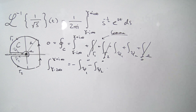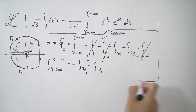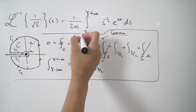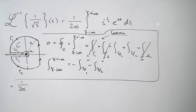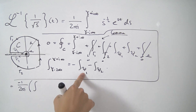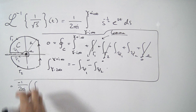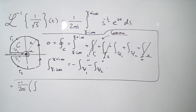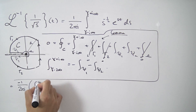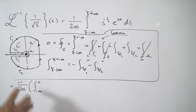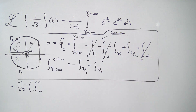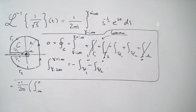Going back to what we want to evaluate: this equals 1 over 2πi times (minus integral over ψ₁ minus integral over ψ₂). Now ψ₁ runs from −∞ to 0, and ψ₂ runs from 0 to −∞. On this interval, s to the minus 1/2 is not real — it's complex because we're taking the square root of negative numbers. So we have to rewrite it in polar form to make sense of it.